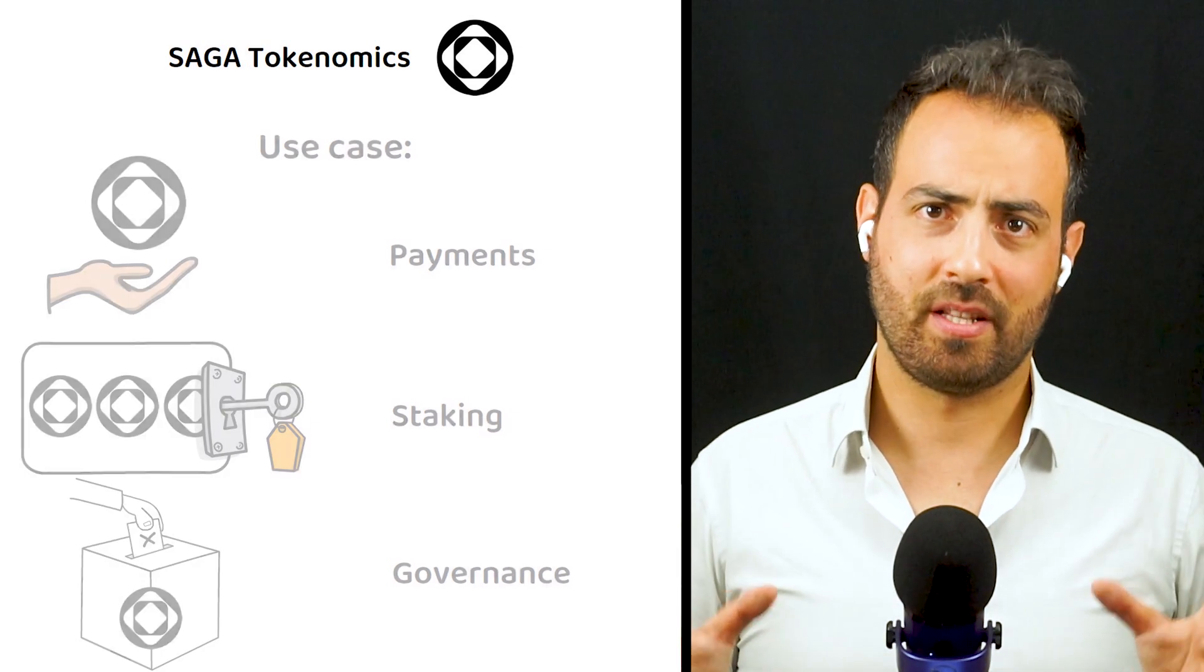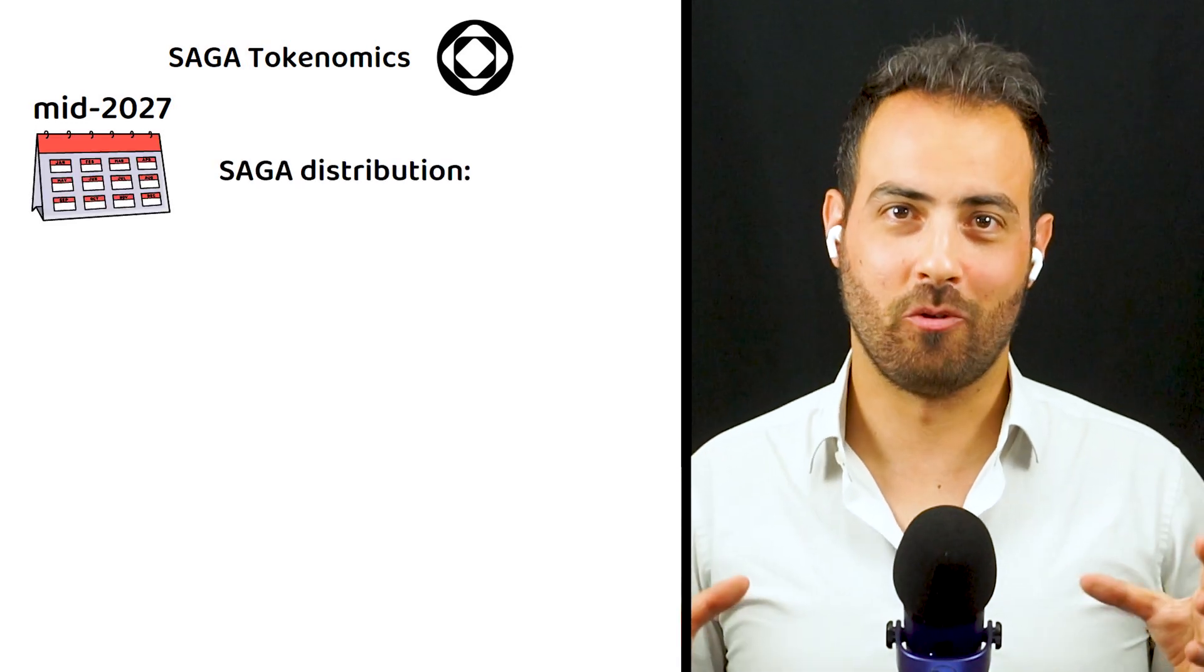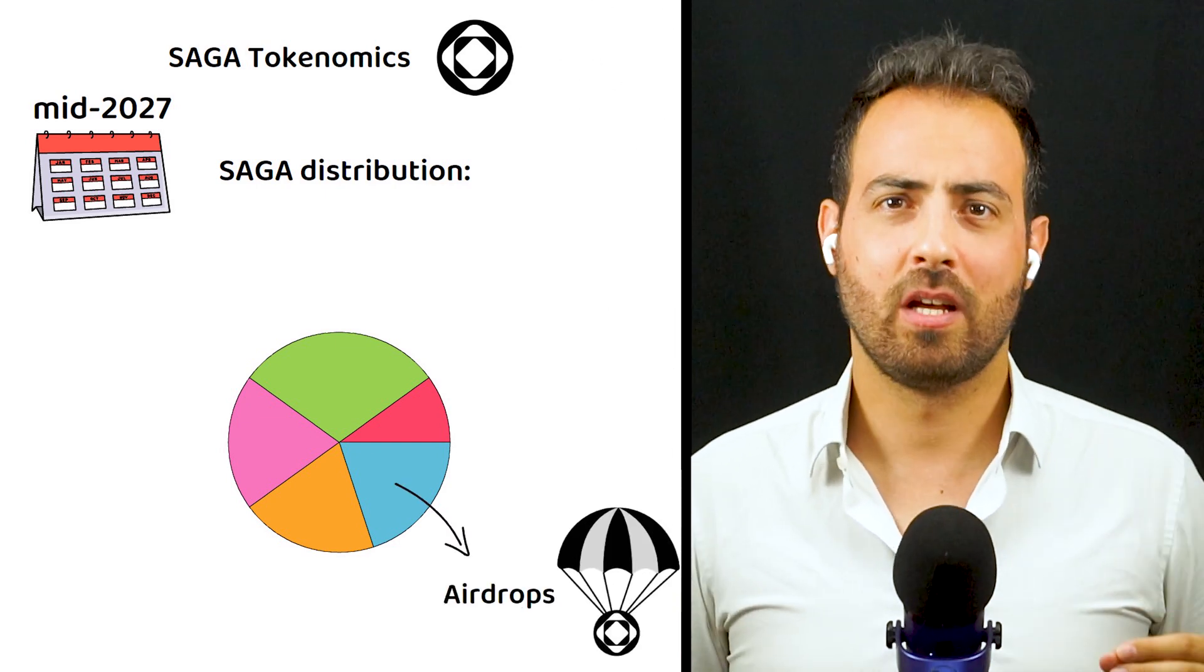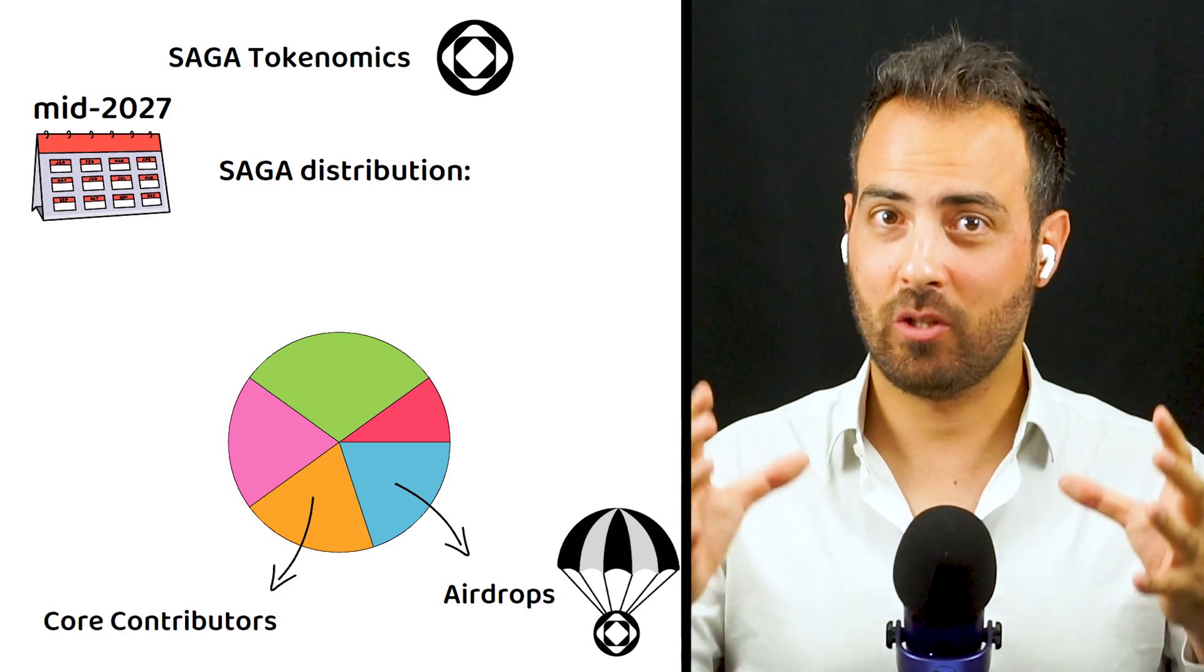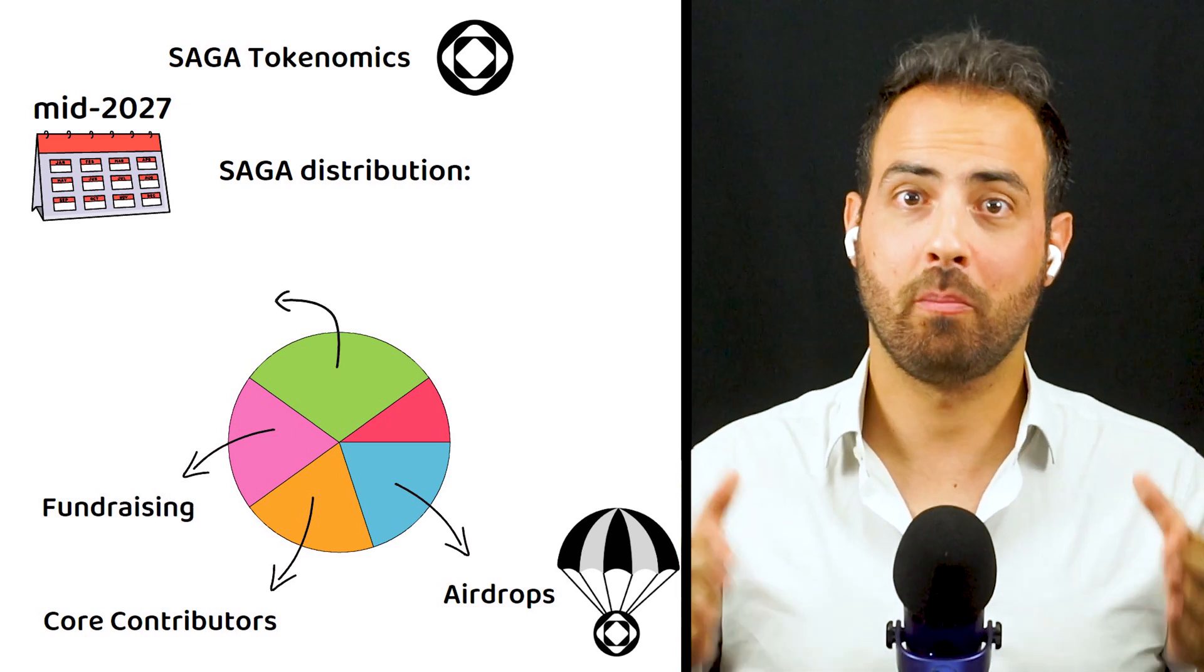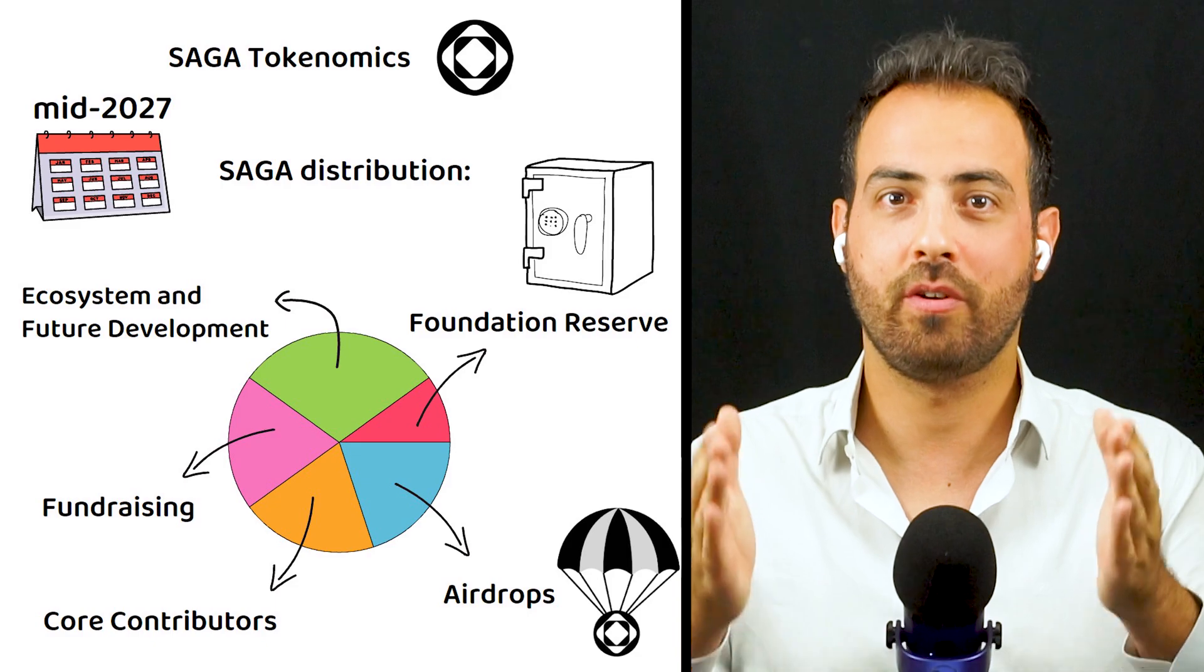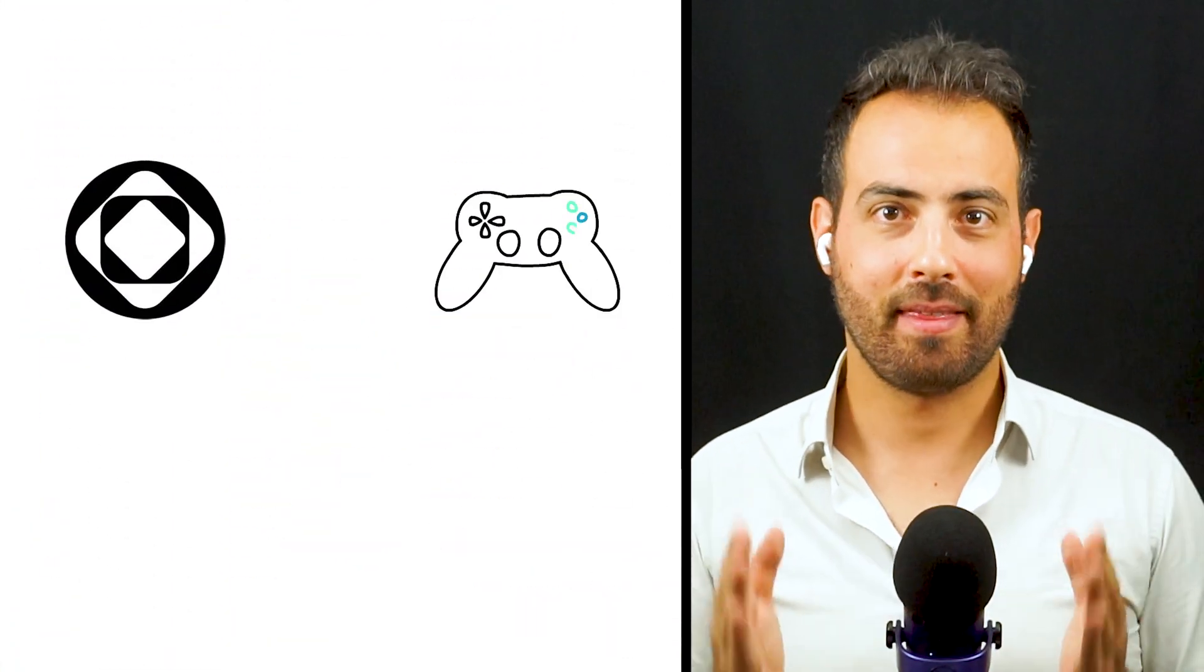After the vesting schedules have finished by mid-2027, the token distribution will look as follows: 20% will have been given away in airdrops, 20% will also be given away to core contributors, another 20% will go towards fundraising, 30% will be put back into the ecosystem and for future development, and the final 10% will make up the foundation reserve.